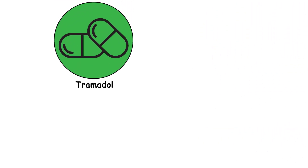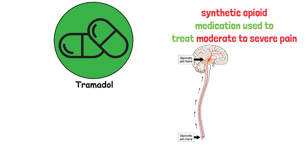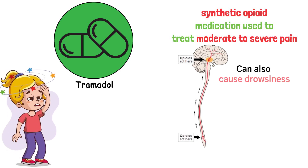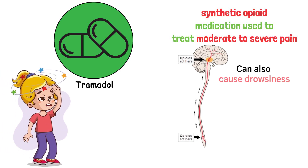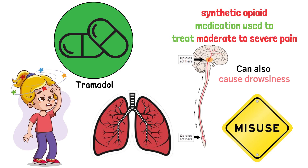Tramadol is a synthetic opioid medication used to treat moderate to severe pain. It works by binding to opioid receptors in the brain to relieve pain, but can also cause drowsiness, dizziness, and respiratory depression, especially when misused.